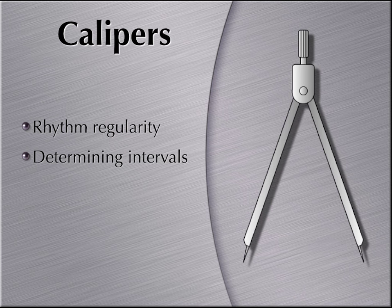Many people try to do this by eyeballing the strip or by taking a piece of paper, marking it a couple of times, and trying to work with that. However, this runs into issues — did the paper distend, or did you not have an exact measurement with the markings? Calipers provide a very accurate measurement very quickly. They provide easy rhythm regularity and help you determine the interval size.